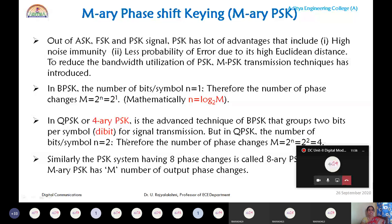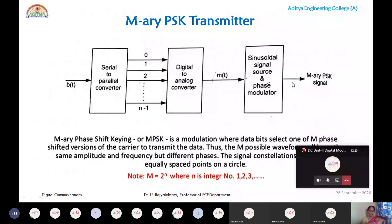Researchers extended this to M-ary PSK where M symbols exist and N bits are grouped per symbol, giving M output phase changes. The generalized block diagram applies to M-ary PSK. If you replace the phase modulator with an amplitude modulator it becomes M-ary ASK; with a frequency modulator it becomes M-ary FSK. Because M-ary PSK has the most advantages, we focus on the M-ary PSK transmitter.